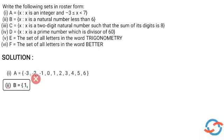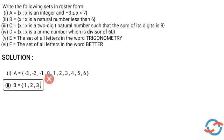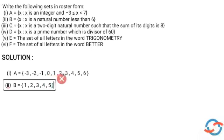Listing them out: 1, 2, 3, 4, 5. So the answer is B is equal to {1, 2, 3, 4, 5}.